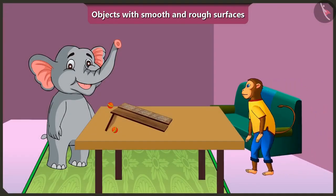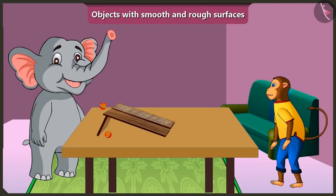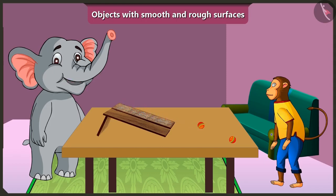Hey Appu, what are you doing here? Look Jaggu, I have two similar balls. When I roll them like this, the ball rolls down faster on this wooden slope. But on this other slope, the ball rolls down slowly. Why is it so, Jaggu?